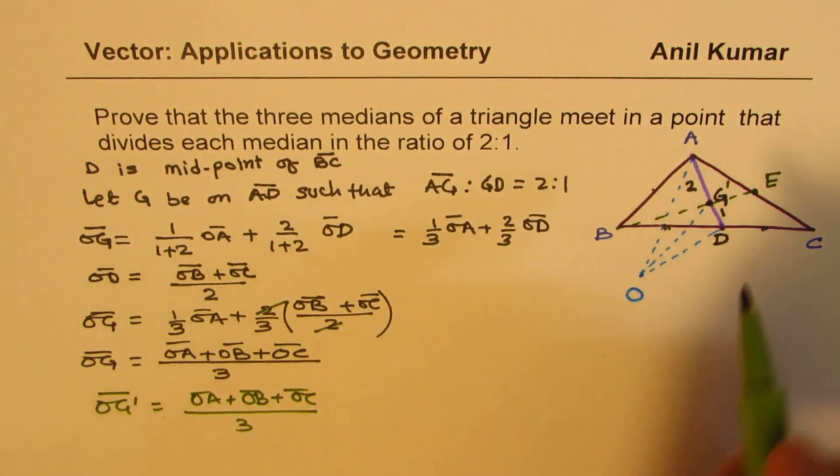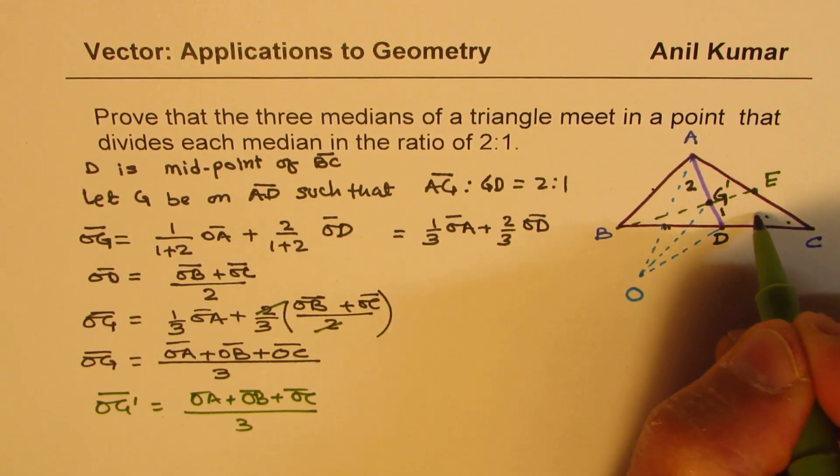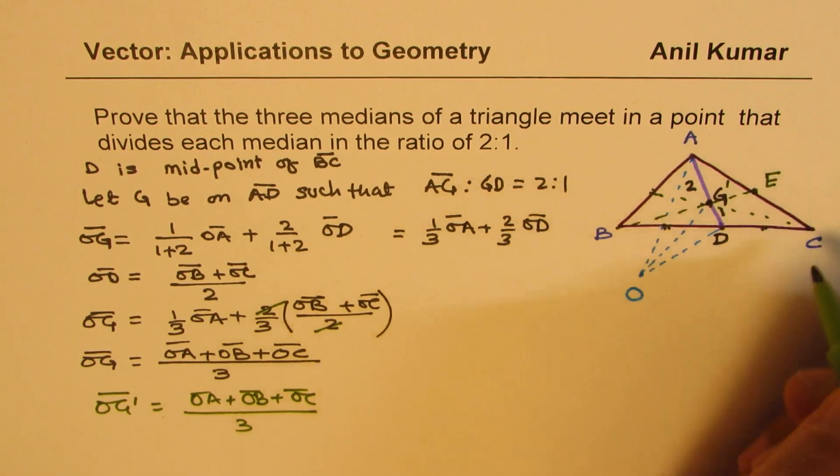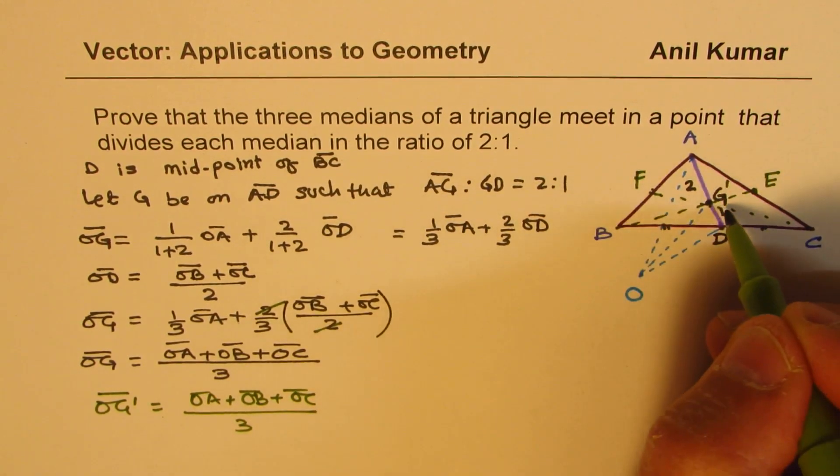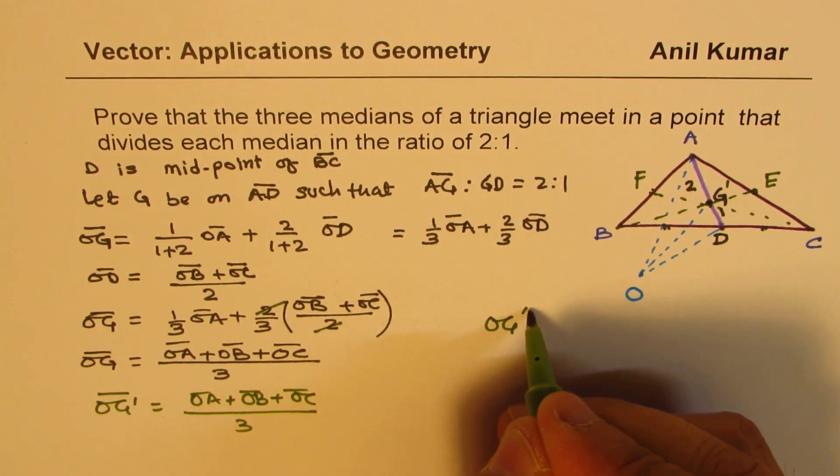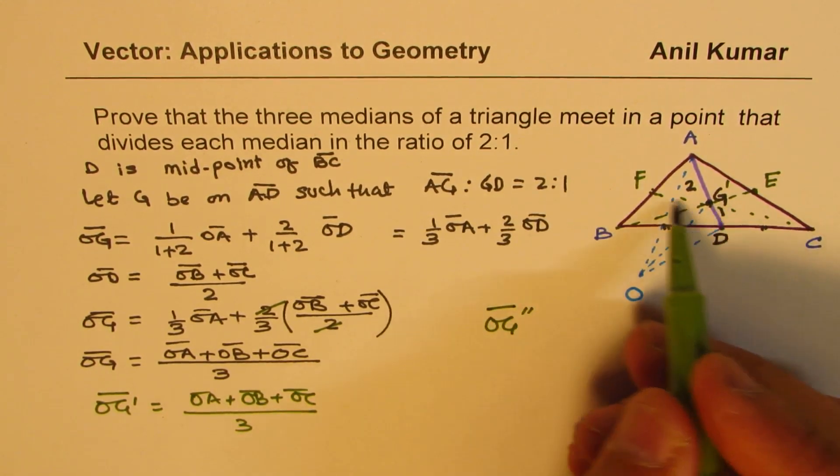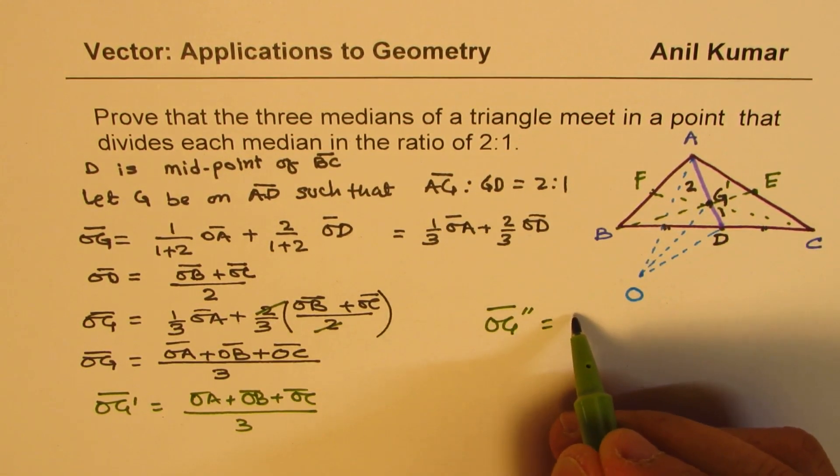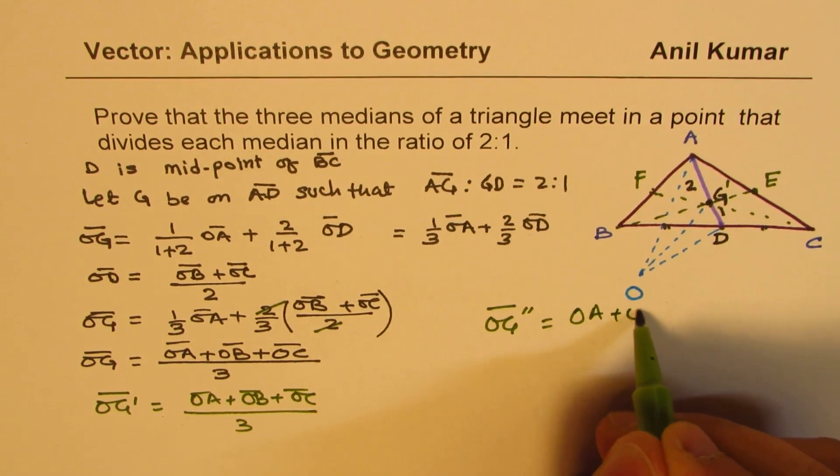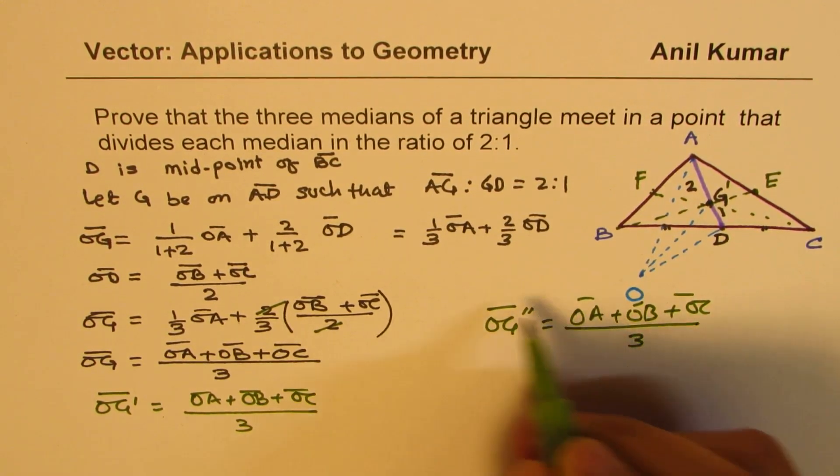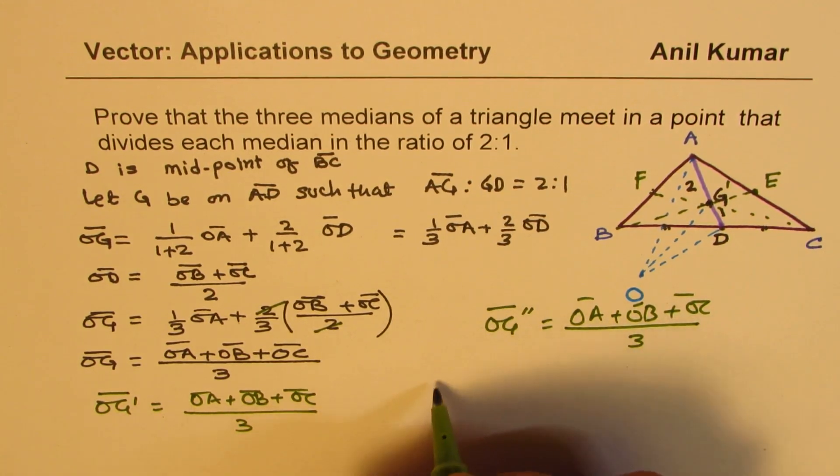So if I take the midpoint on AB and let's say this point is F and let's consider OG'', some other G, some other point on this median, following the same method we will again show that that is also equal to (OA + OB + OC)/3. So all the three points are the same.